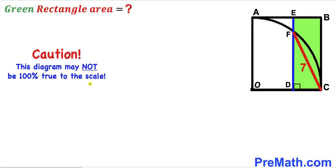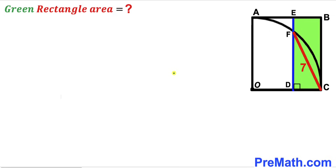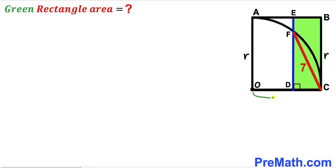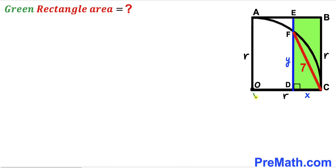Please keep in mind that this figure may not be 100% true to scale. For our first step, let's make an observation: AO is the radius of this quarter circle, so I'm going to label that as lowercase r. Segment BC is also r, and radius OC is r as well. I'm going to label the tiny segment CD as lowercase x, and side FD as lowercase y.